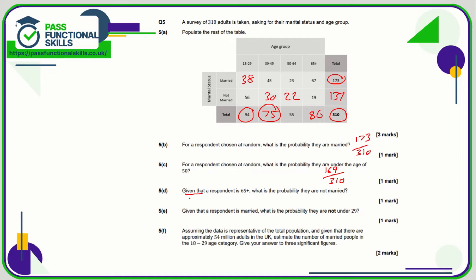For part d — be careful when it says 'given that', as that means we're looking at a subset. Given that the respondent is in the 65 plus group, we're looking at the 86 in that group. What's the probability they're not married? The not-married count is 19 out of 86.